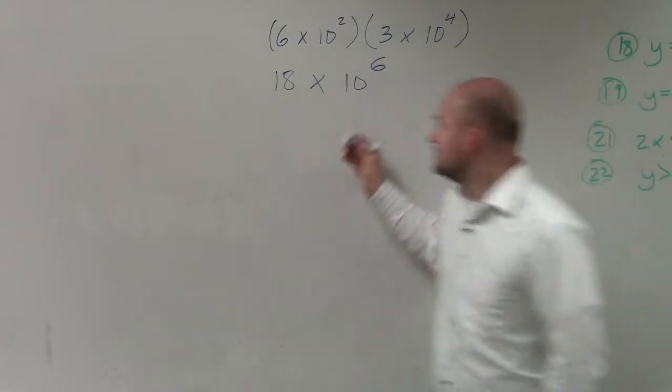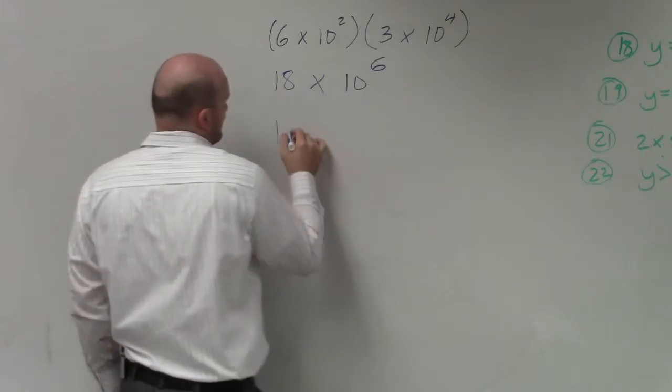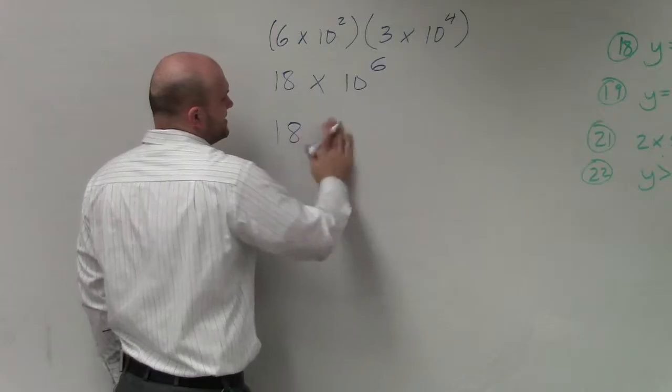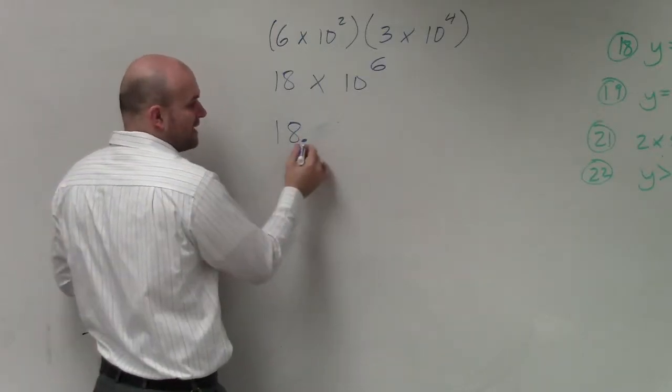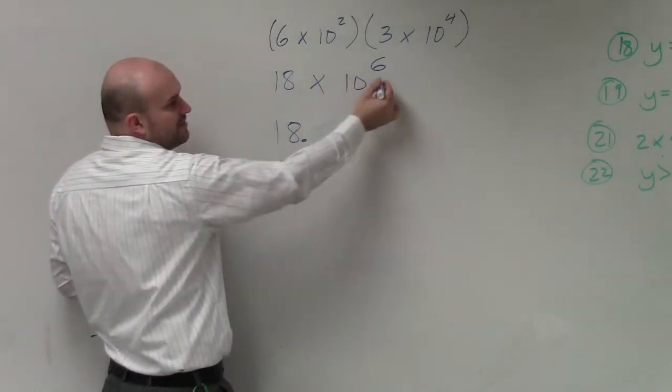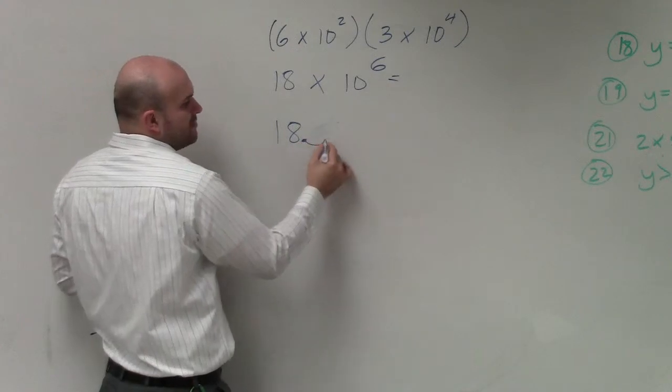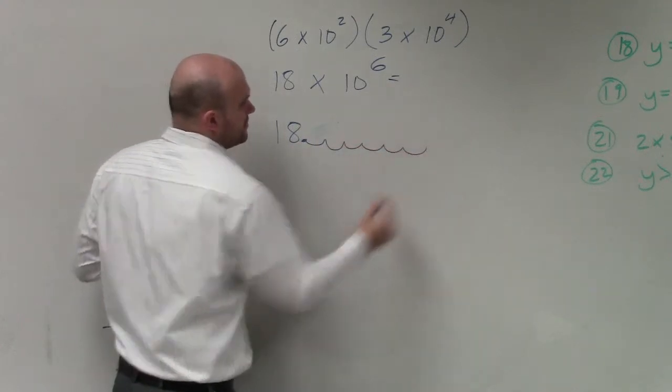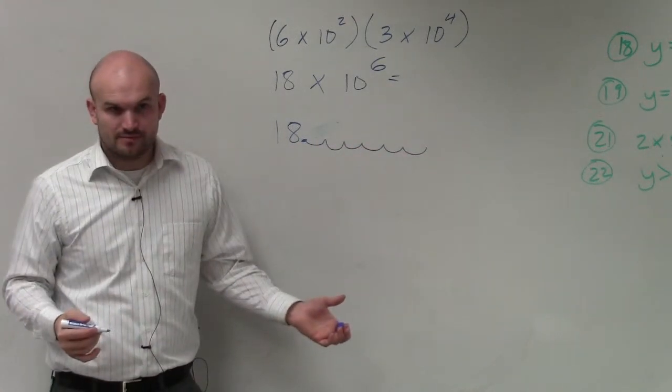So if you were going to write this as 18 times 10 to the sixth power, here's my decimal point. If I was going to rewrite this out as the number, I'd move it over six places. Correct? Everybody agree with me?